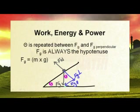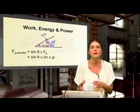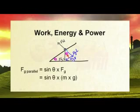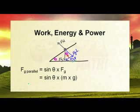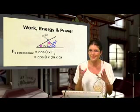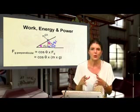To recap: theta always repeats between Fg and Fg perpendicular, and Fg always acts as the hypotenuse. Using trigonometry: Fg parallel is opposite to theta, so Fg parallel = sinθ × Fg. Fg perpendicular is adjacent to theta, so Fg perpendicular = cosθ × Fg. No matter what anyone says — Fg parallel is always sinθ and Fg perpendicular is always cosθ.